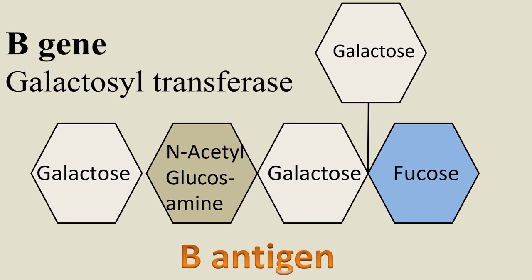We can see that all three genes — A gene, B gene, and H gene — encode for antigens which are slightly different structurally.